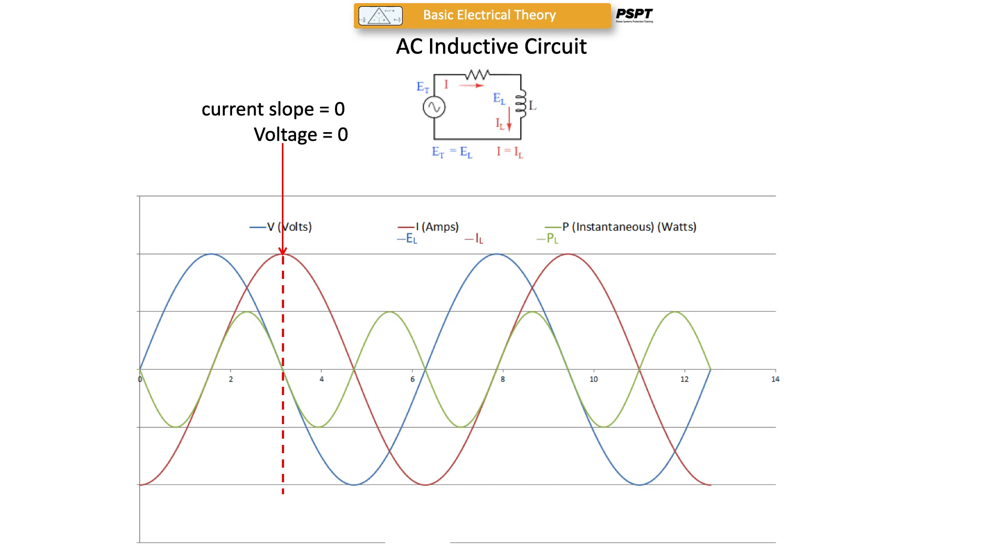Again, where the current slope is at a maximum where it's crossing zero, voltage is a maximum. But because current is zero at this point, so is the power zero.